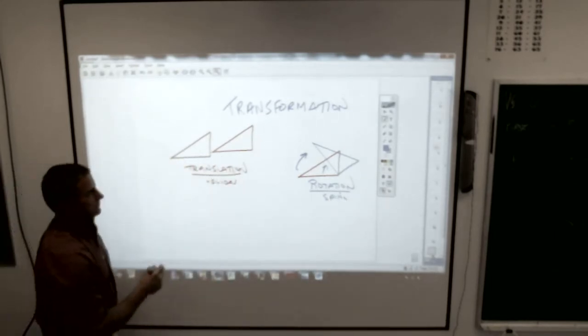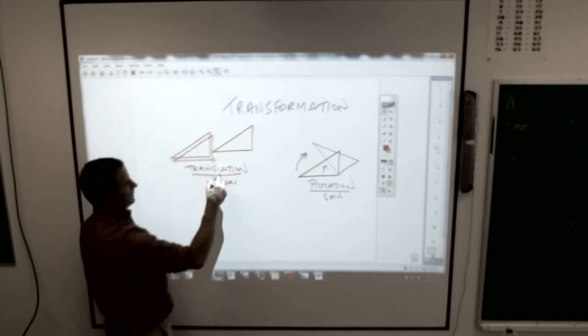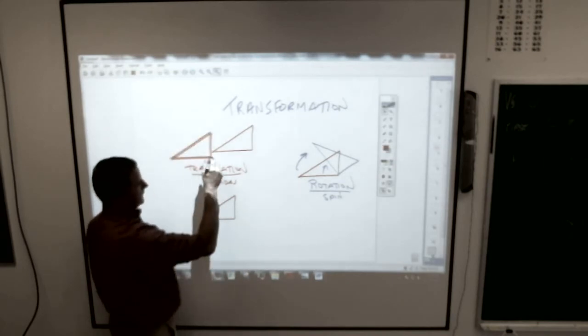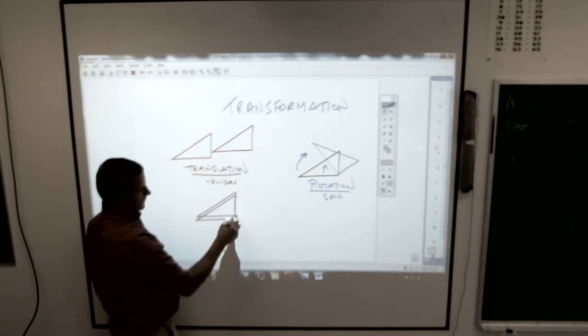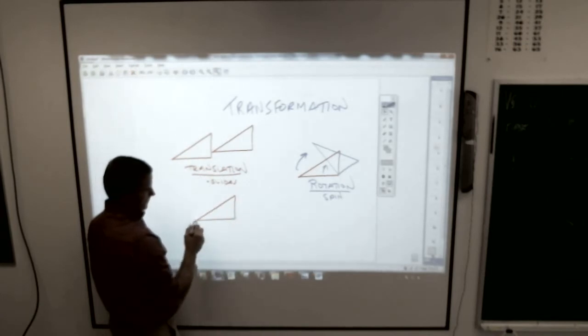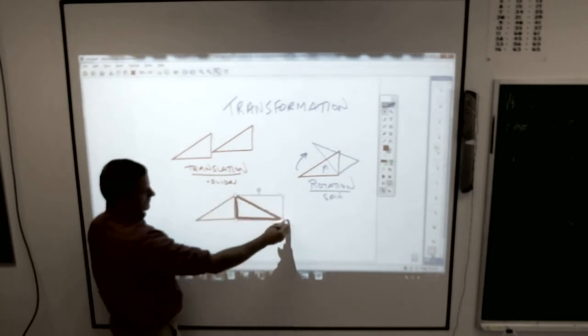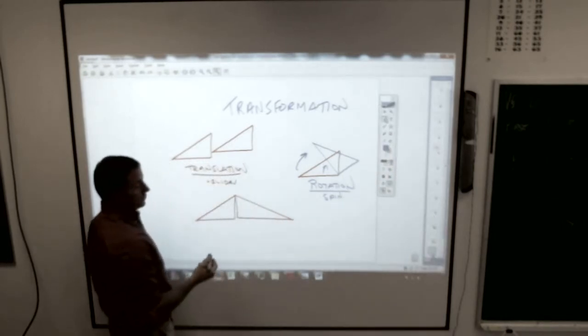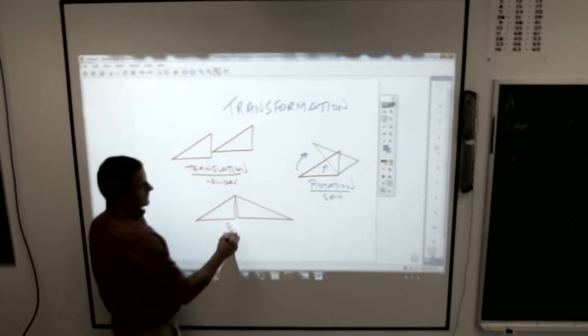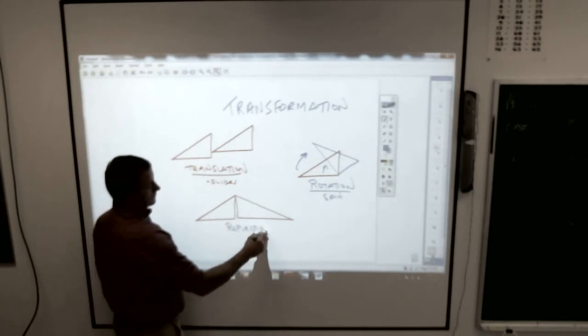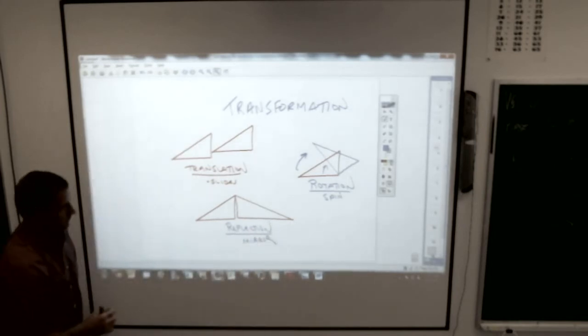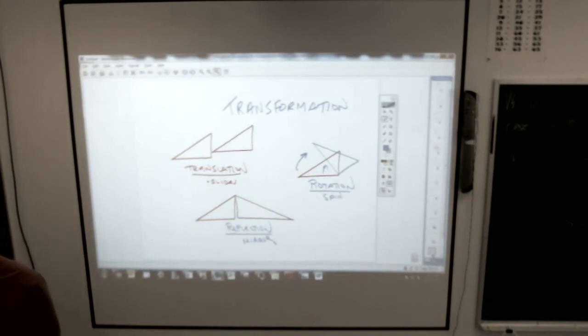And the third thing is, if you take the shape and it does this, kind of like a mirror image of itself. That's not the best, but I guess it'll work. We call that a reflection, a mirror image. Those are the three basic transformations that we talk about.